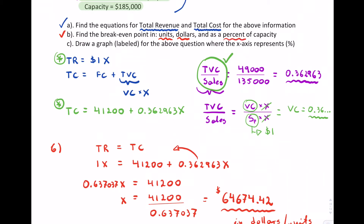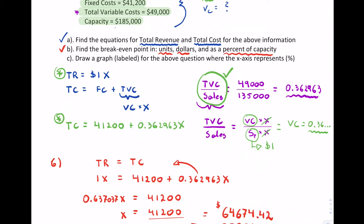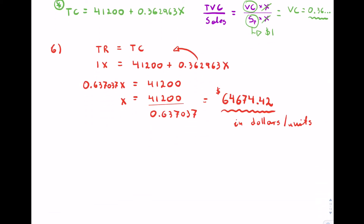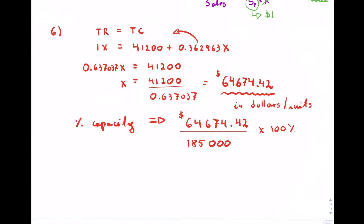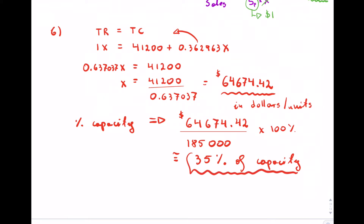For break-even as a percent of capacity, capacity was one hundred eighty-five thousand five hundred. Percent of capacity equals sixty-four thousand six hundred seventy-four point two zero divided by one hundred eighty-five thousand five hundred, times one hundred percent, which is approximately thirty-five percent of capacity.